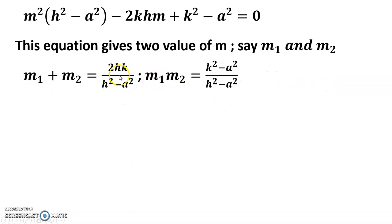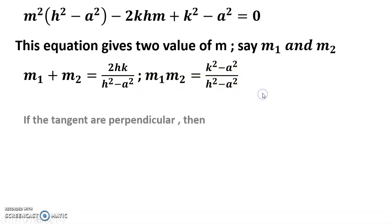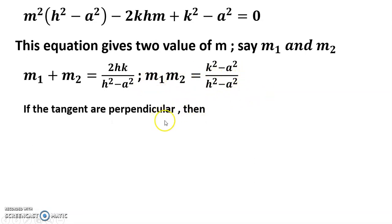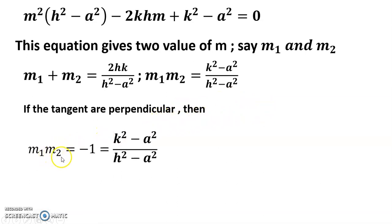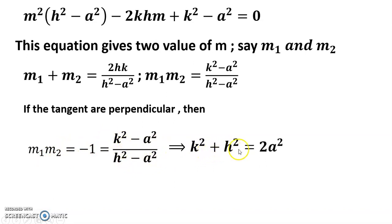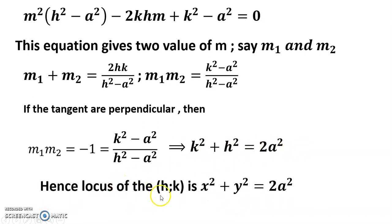From the quadratic in m: m₁ + m₂ = 2hk / (h² − a²), and m₁·m₂ = (k² − a²) / (h² − a²). Since the tangents are perpendicular, m₁·m₂ = −1. Therefore k² − a² = −(h² − a²), which gives h² + k² = 2a². So the locus is x² + y² = 2a².